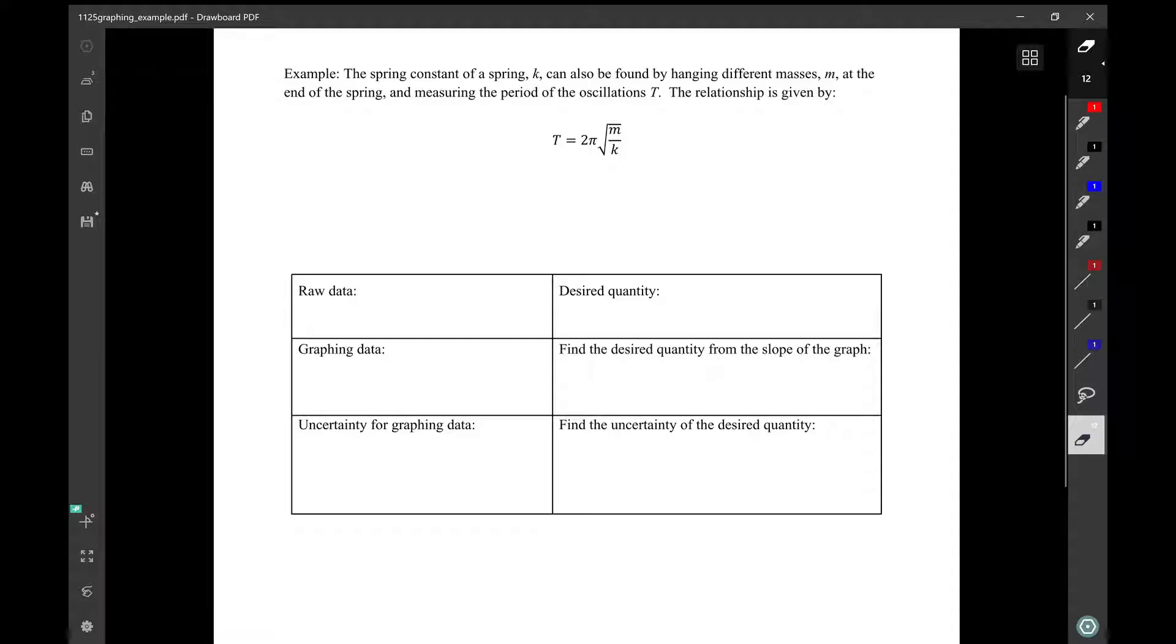So here what we want to find out eventually is the spring constant k, which is independent of what the hanging masses are. For the different hanging mass, the period of oscillation T will be different. So our raw data will be the mass m, and for each m, you're going to measure a different period. So the raw data is m and T. The desired quantity is the spring constant k.